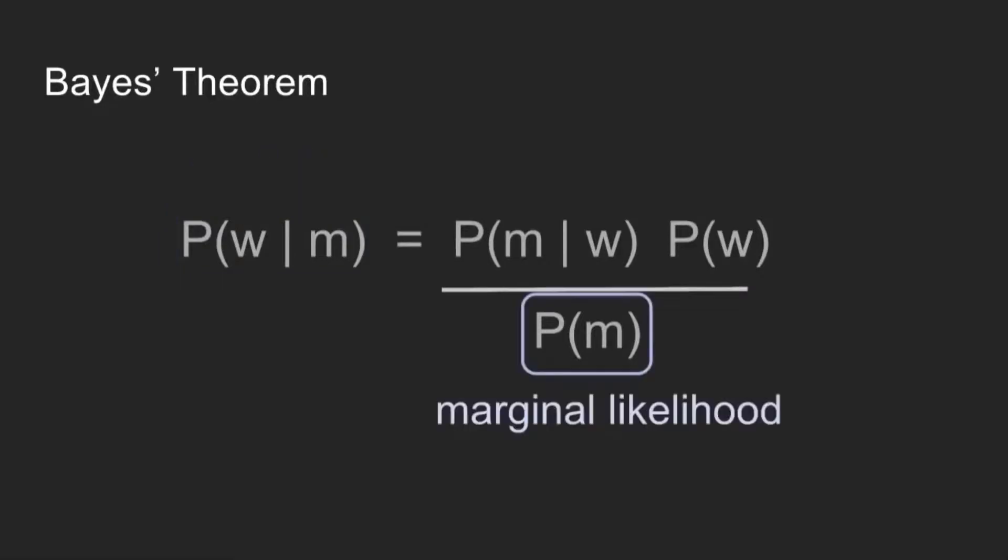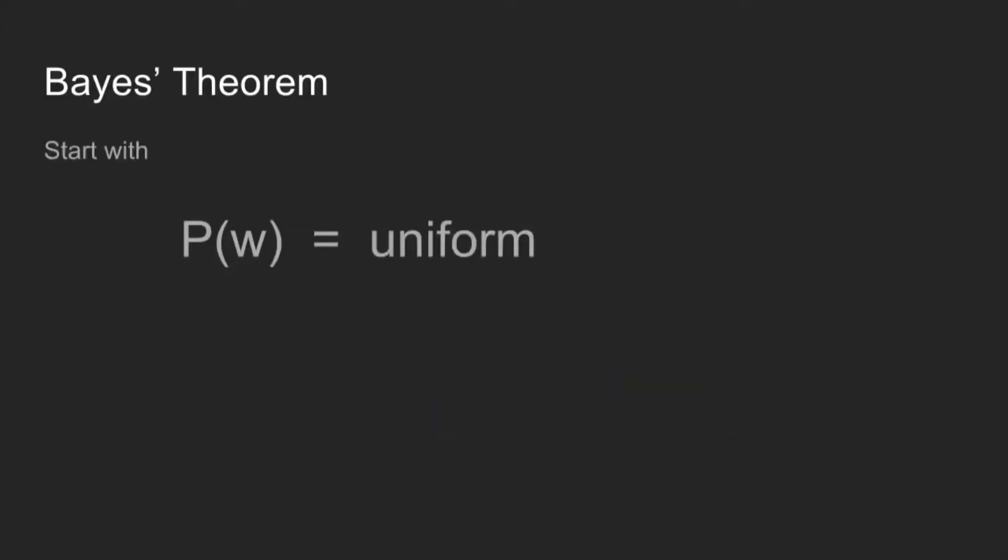This term on the bottom we're going to ignore for the most part. It'll be a constant, but it's called the marginal likelihood. So we're going to start by not assuming anything about her weight. It could be 1 pound, 10 pounds, 20 pounds, 100 pounds. We're going to let this be uniform, and we're going to let the data speak.